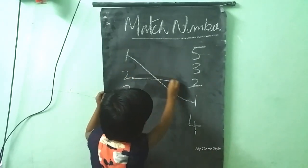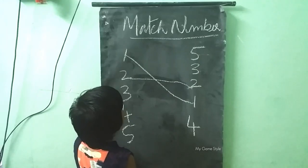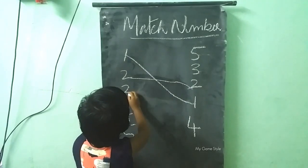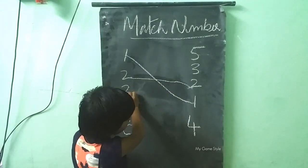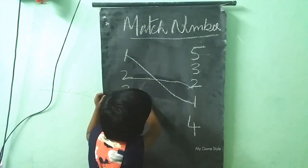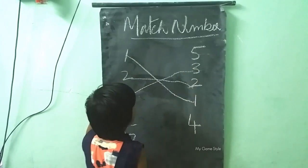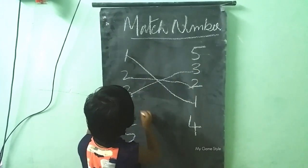2. Where is 2? Ikada. 3. Where is 3? Ok. Next.